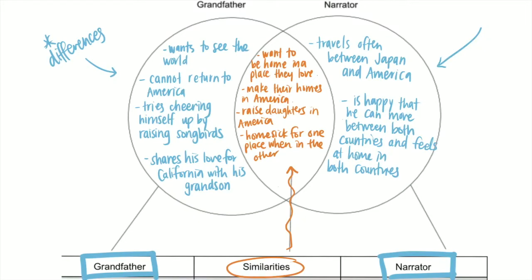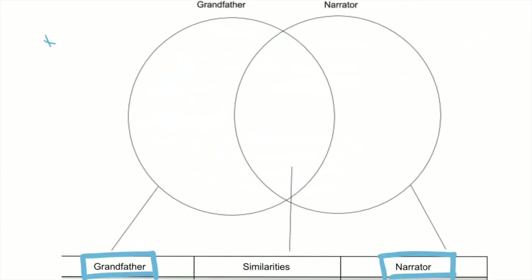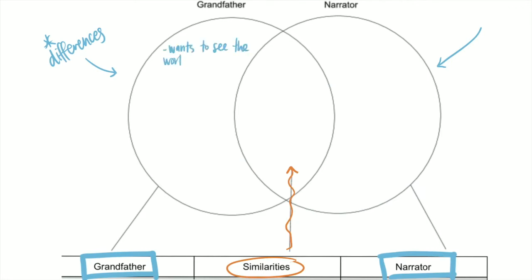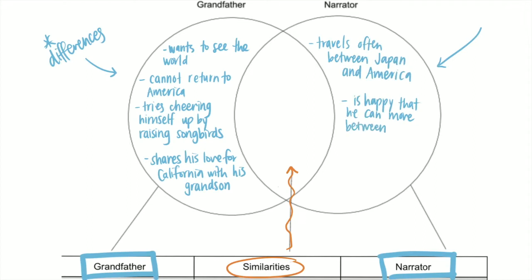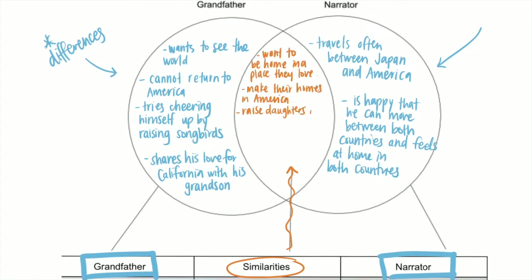Now for comparing two characters' point of view. Last week we talked about grandfather and the narrator, and this was part of your classwork. In this Venn diagram, the orange represents similarities between the two characters, and the light blue represents the differences. Grandfather wants to see the world, cannot return to America, tries cheering himself up by raising songbirds, and shares his love for California with his grandson. The narrator travels often between Japan and America, is happy to move between both countries, and feels at home in both. Both characters want to be in a place they love, make their homes in America, raise daughters in America, and are homesick for one place when in the other.